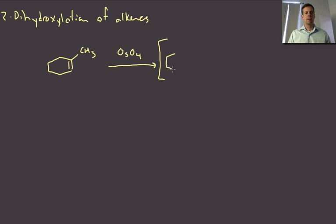And I will just remind you that dihydroxylation is going to proceed through a cyclic intermediate, which is an osmate ester.